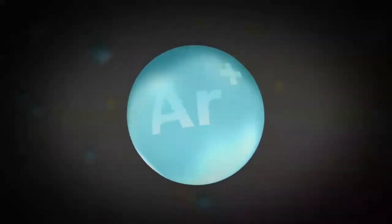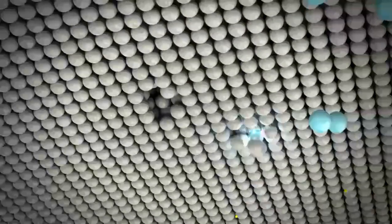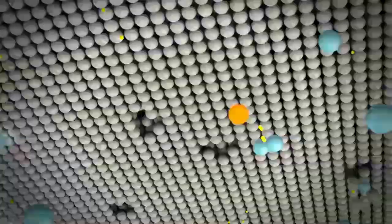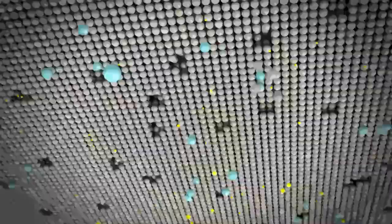The sputtering target is negatively charged. Therefore, the argon ions are attracted towards its surface. Let's see what happens. The argon ions collide with the target and eject molybdenum atoms from its surface. This is what the sputtering process is all about.